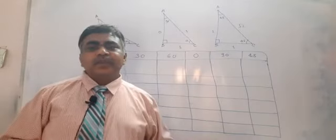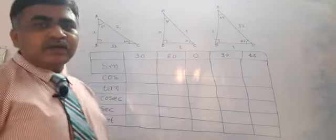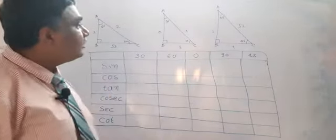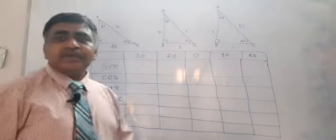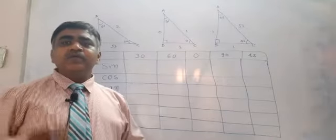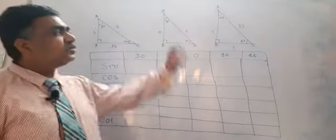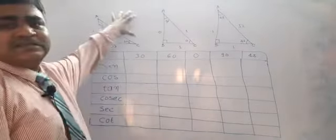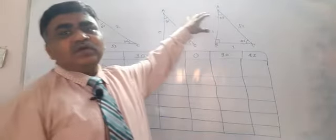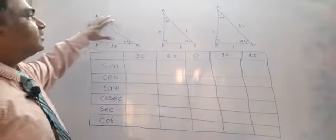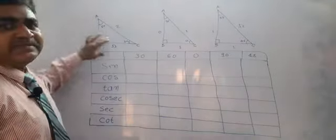Hello. Today we are going to see how to remember trigonometric values. You don't need to remember all this stuff. You just need to remember these three triangles — the values of these three triangles. This is triangle A, B, and C.